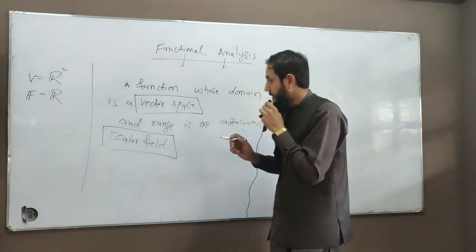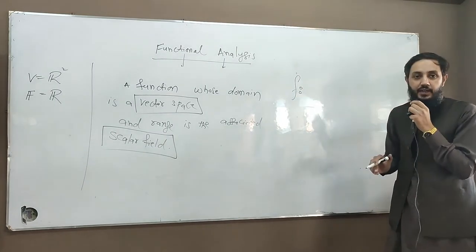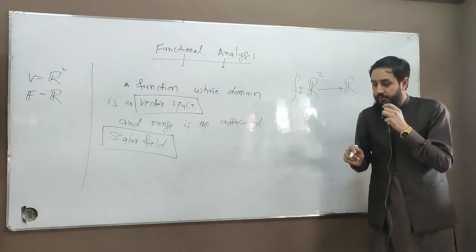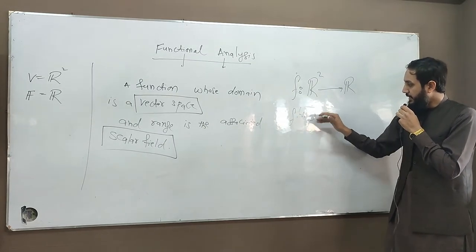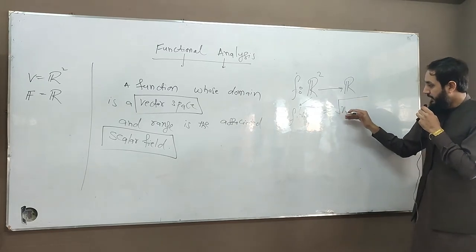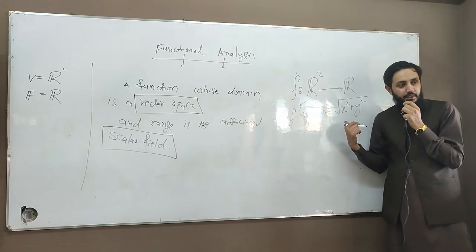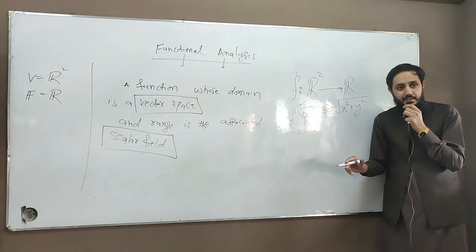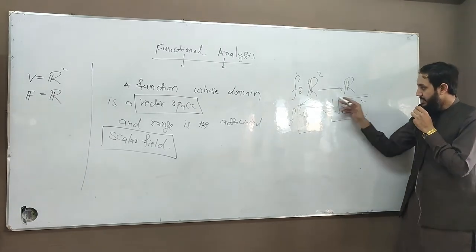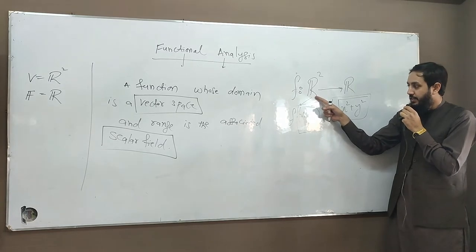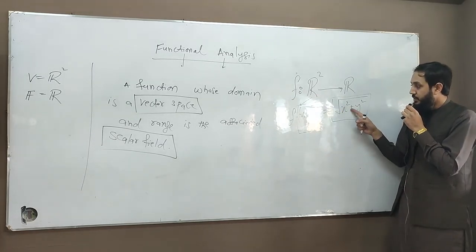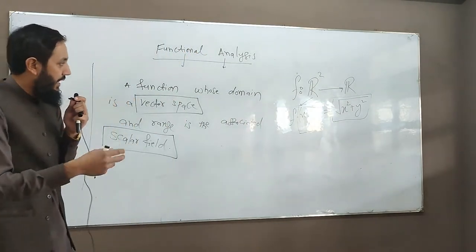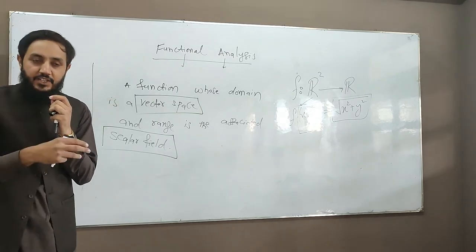I'm defining a function from the vector space R squared to its field R. Suppose whenever I put any ordered pair — any vector — into this function, I define it as the length: √(x² + y²). We know that this function gives us the length of the vector. What are the inputs? Vectors. What are the outputs? Scalars. So a function whose domain is a vector space and range is a scalar field is termed as a Functional.